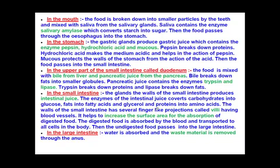The completely digested food is then absorbed by our body through villi — small finger-like projections present on the walls of the small intestine. These villi are supplied with blood vessels and their function is to increase the surface area for absorption of digested food. The absorbed food is taken up by the blood and transported to different parts of the body as required. Whatever undigested food remains passes into the large intestine.